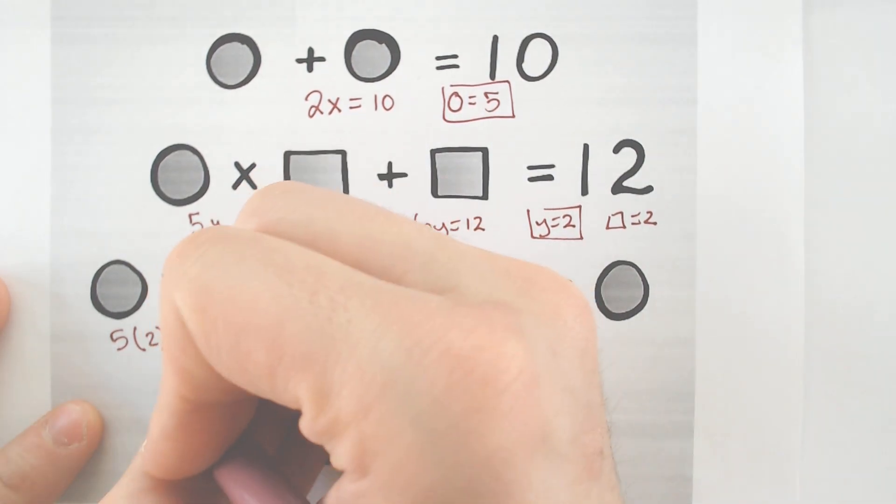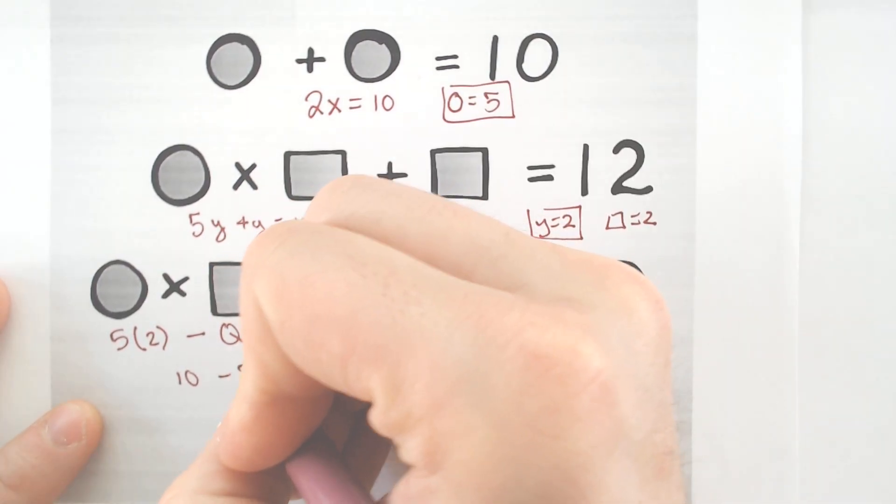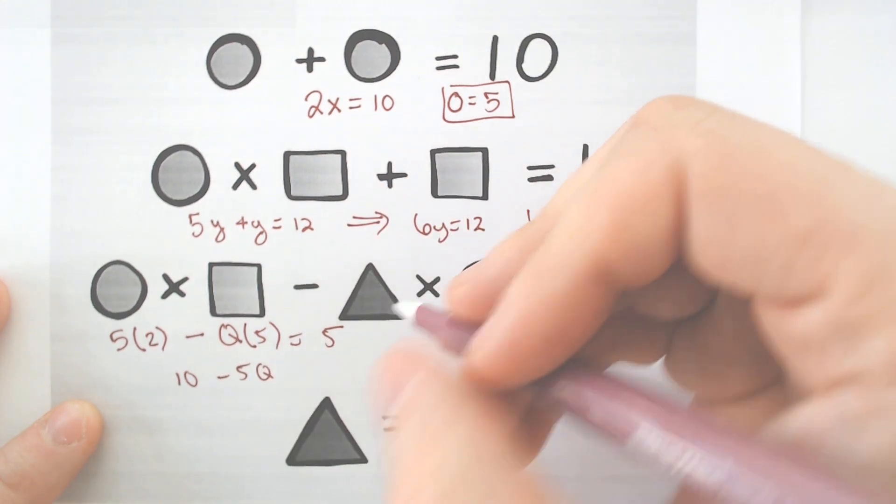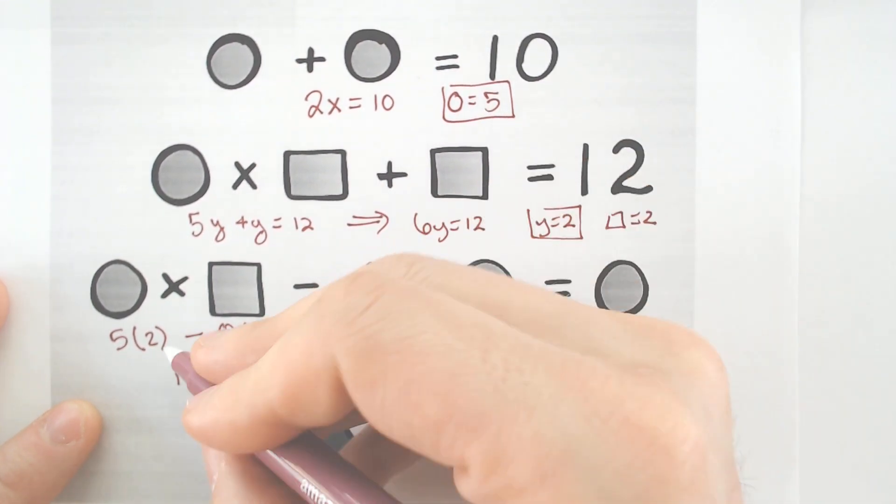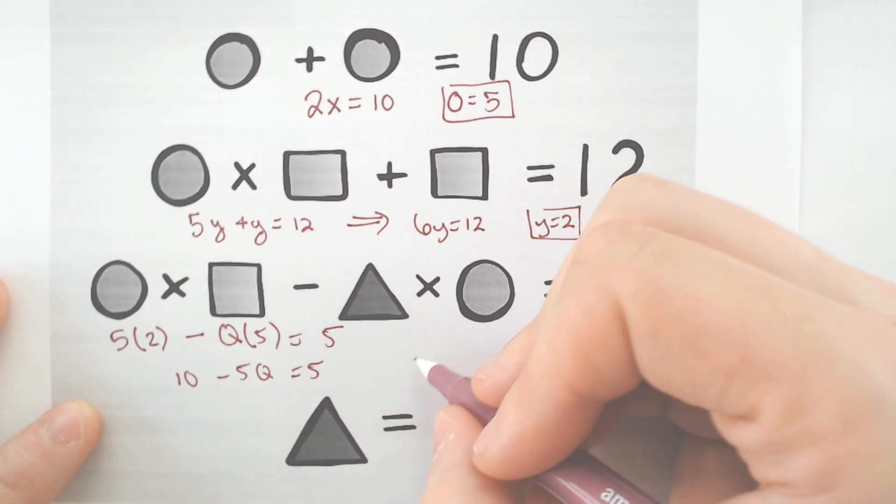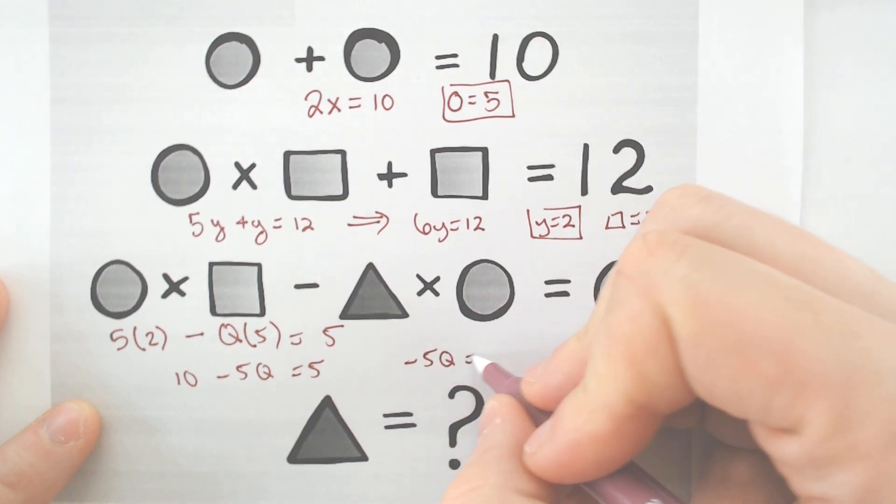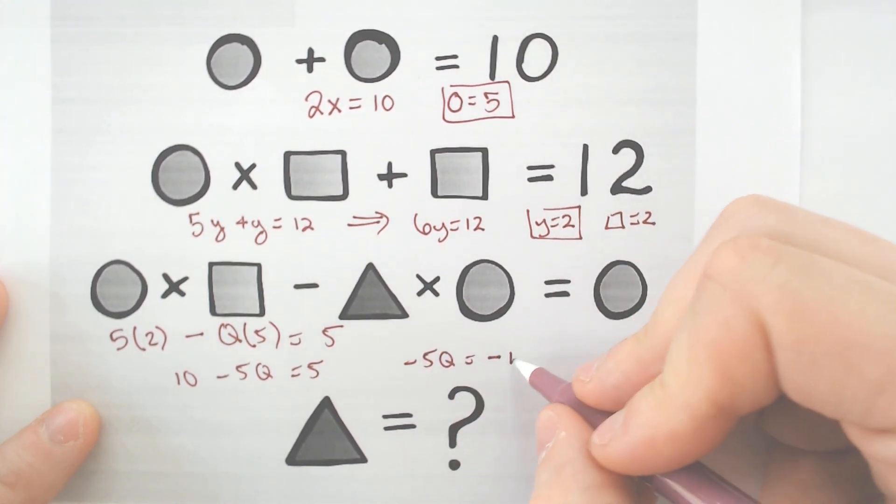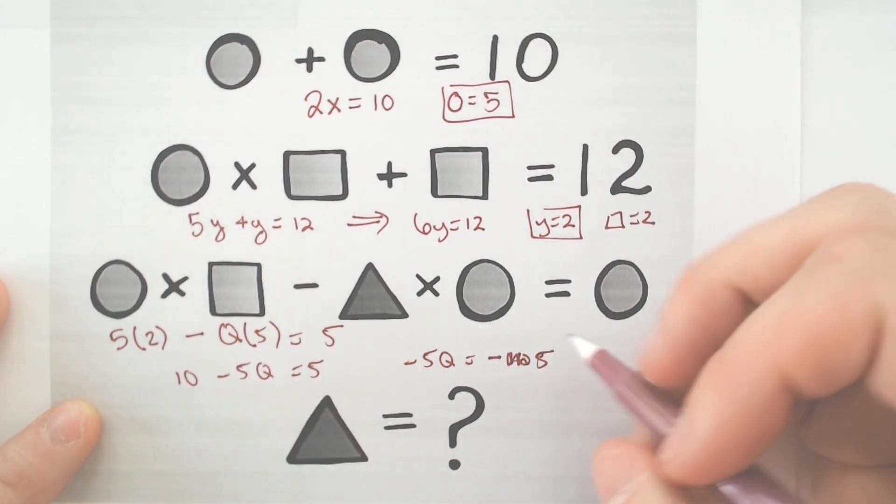All right, so we got 5 times 2, that's 10, minus 5Q, which is representing triangle, will equal 5. Subtract the 10 over. Negative 5Q will equal negative—nope, negative 5, because subtract 5 minus 10 is negative 5.